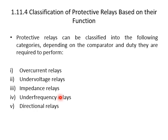An overcurrent relay operates when the current exceeds a certain limit. An impedance relay measures the line impedance between the relay location and the point of fault, and operates if the point of fault lies within the protected section. A directional relay checks whether the point of fault lies in the forward or reverse direction. The above relays may be electromechanical, static, or numerical.